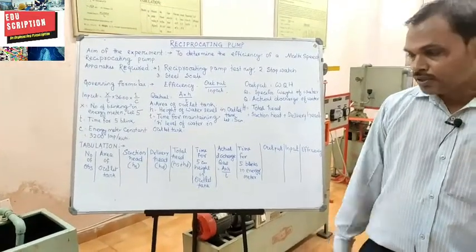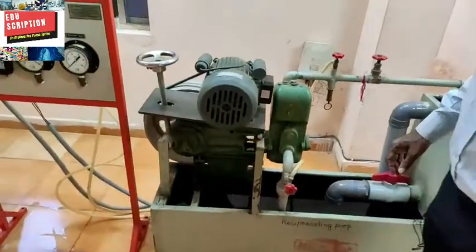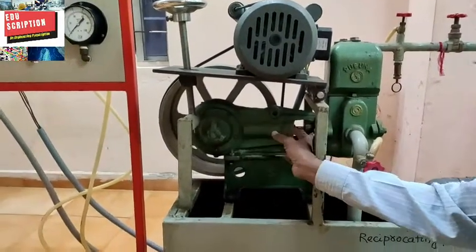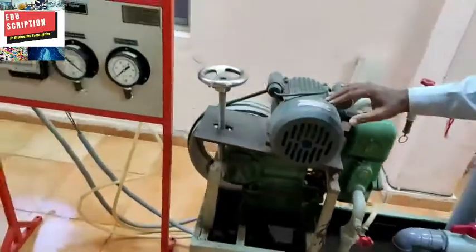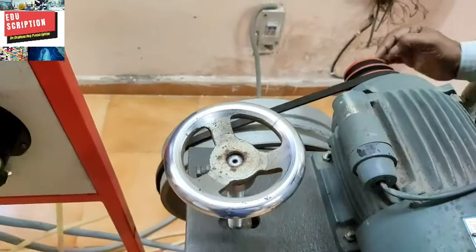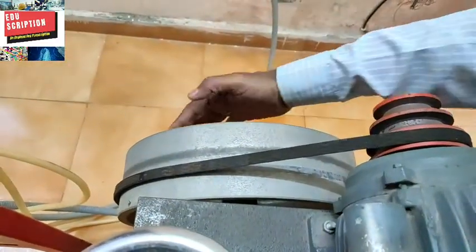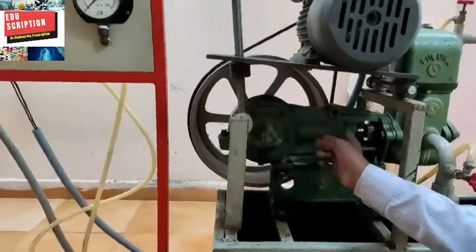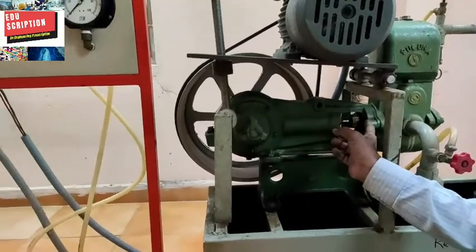Now we move to the machine part. This arrangement is your reciprocating pump test rig. There is one cylinder and piston arrangement inside it. This is the motor, and from the motor, power is transmitted through a step-down pulley and belt drive. When this pulley rotates, a cam and follower arrangement inside causes the piston to move.